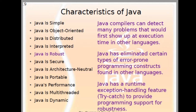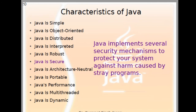Java is robust. Java compilers can detect many problems that would first show up at execution time in other languages. Java has eliminated certain types of error-prone programming constructs found in other languages, like pointers. Java also has runtime exception handling features to provide programming support for robustness. Java is secure — it implements several security mechanisms to protect your system against harm caused by stray programs.